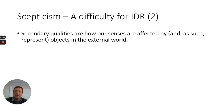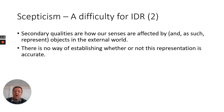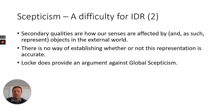If we think about this argument in relation to the distinction that Locke draws between primary and secondary qualities, we know that secondary qualities are how our senses are affected by objects in the external world, but there is no way of establishing whether or not this representation is accurate.